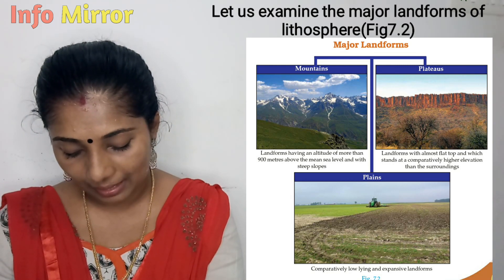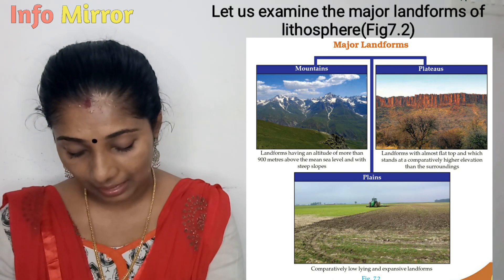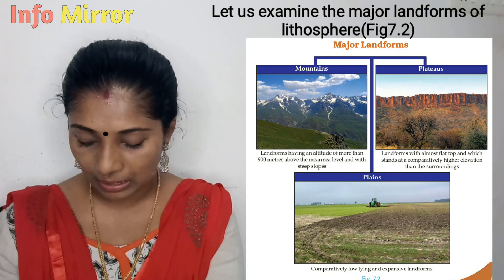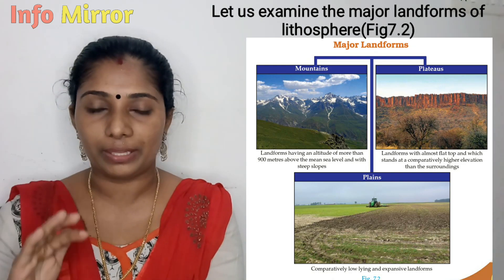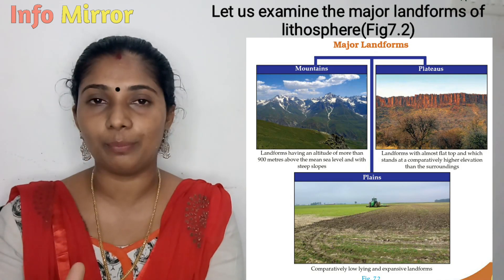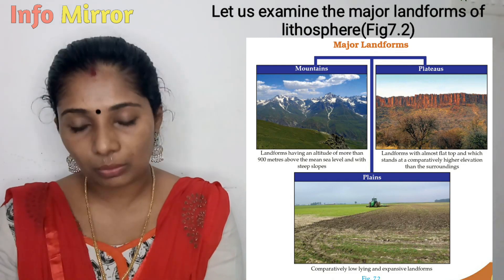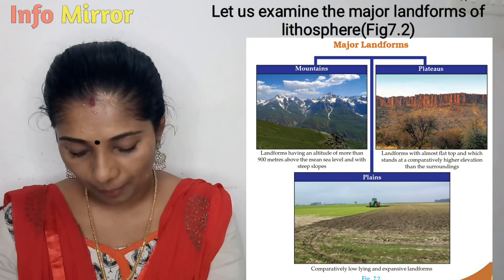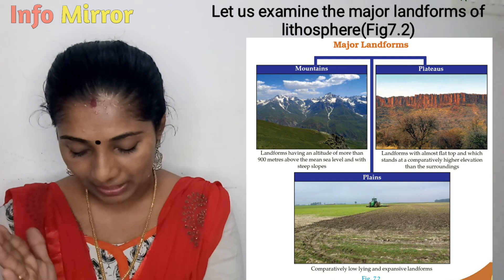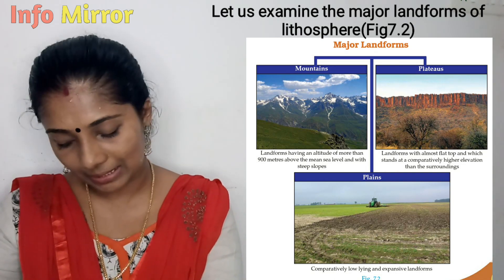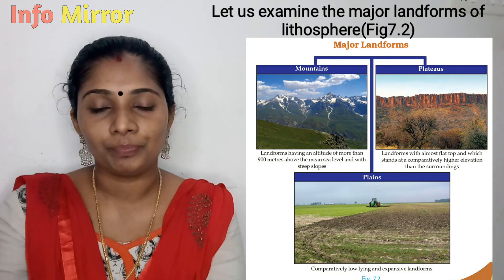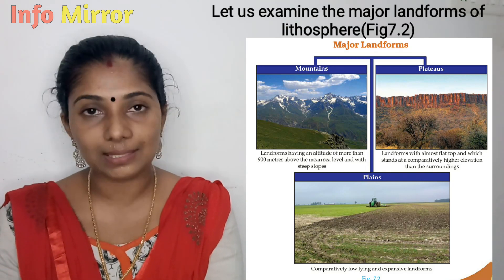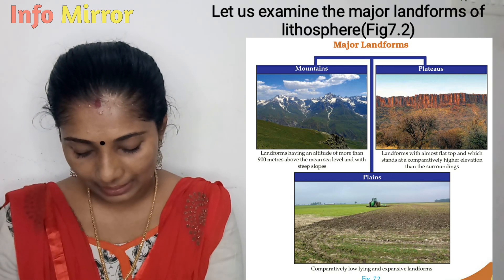Landforms having an altitude more than 900 meters above the main sea level with steep slopes are called mountains. The landforms with almost a flat top and which stand at a comparatively higher elevation than the surroundings are plateaus. The low-lying and expansive landforms are called plains.